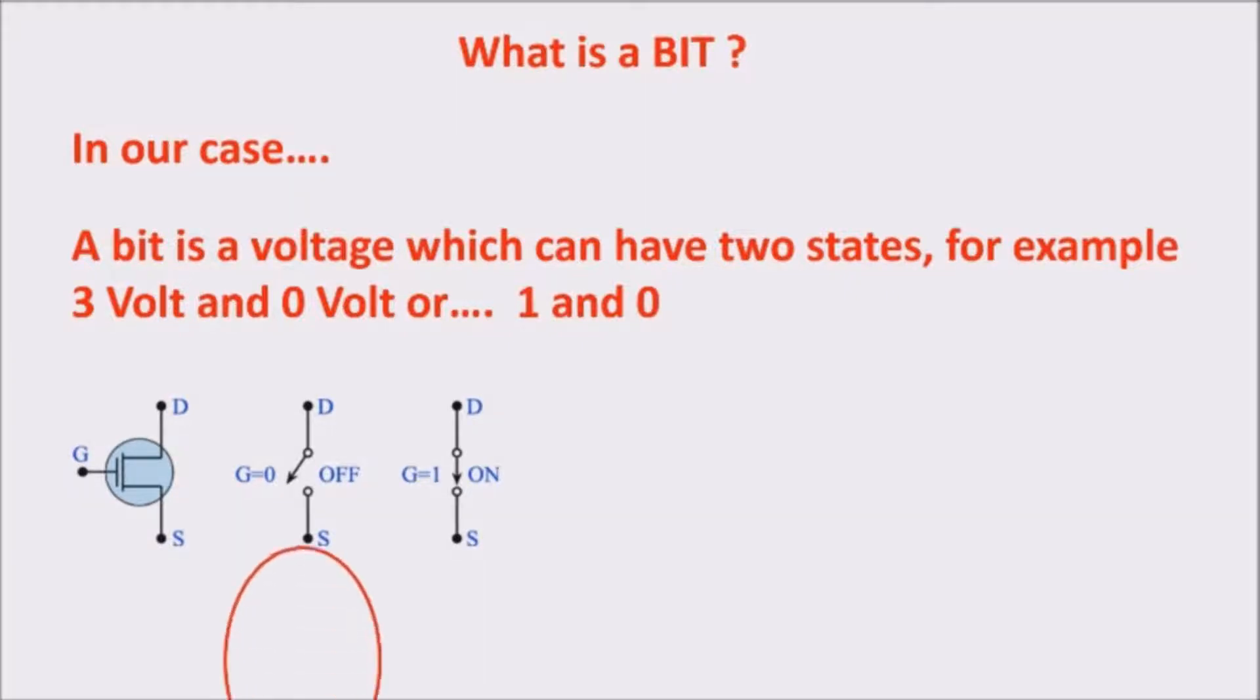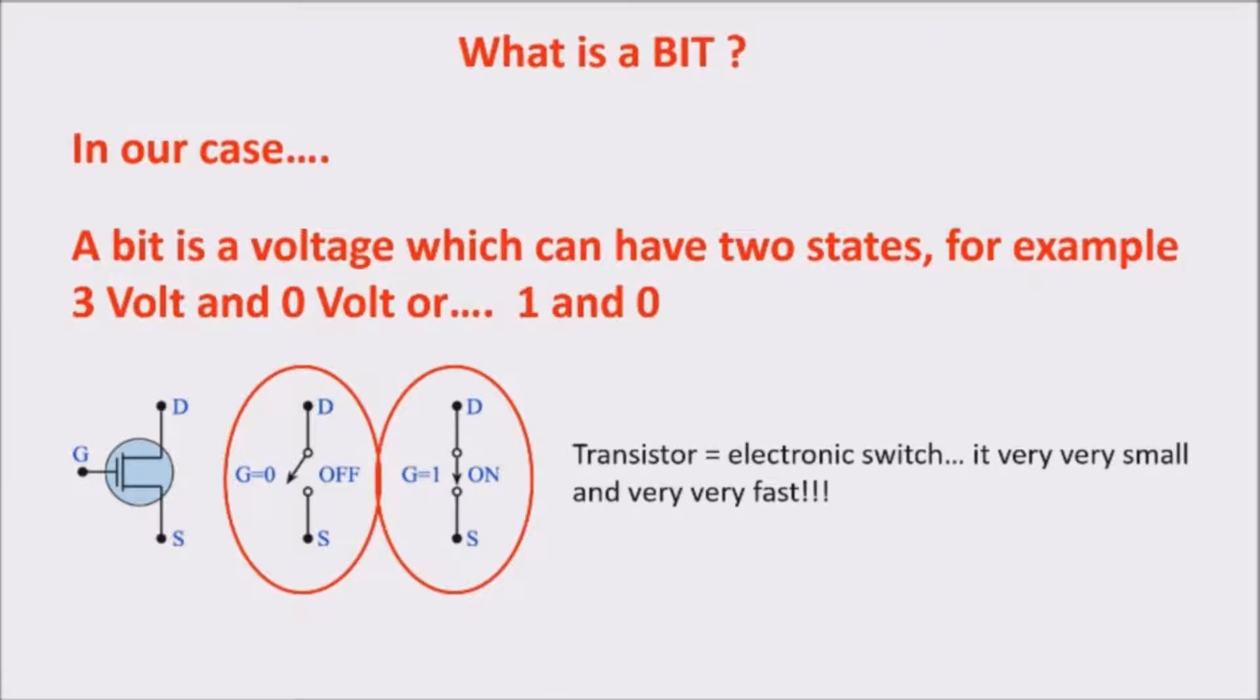As you can see, if I apply 0V to point G, the transistor is off and the circuit is open. If I apply 3V to point G, the transistor is on and the circuit is closed. Furthermore, the transistor has very important features. It is very small and it is very fast.